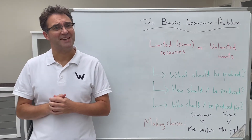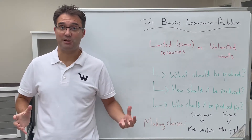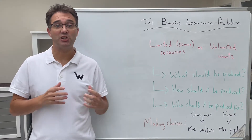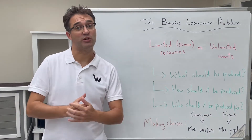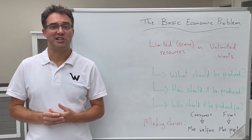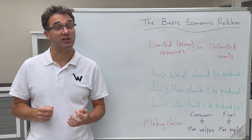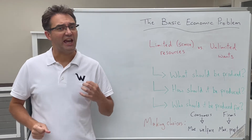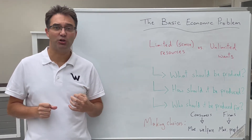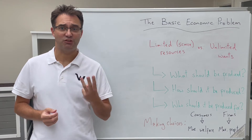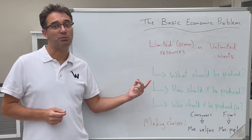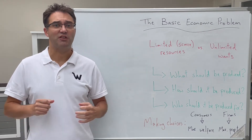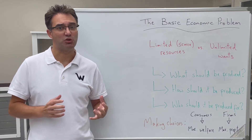To call the economic problem 'basic' can be a bit misleading, because it's anything but simple to solve. The economic problem itself is how to best use limited resources to satisfy unlimited wants. The study of economics has risen out of trying to solve this problem, looking at how different participants in the economy interact to decide three things: what should be produced in terms of goods and services, how it should be produced, and who those goods and services should be produced for.